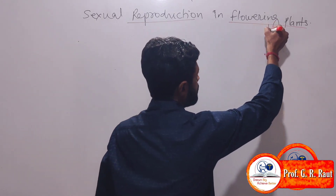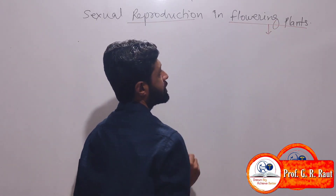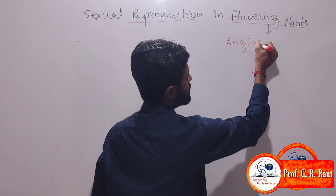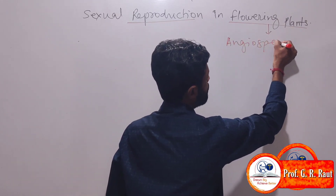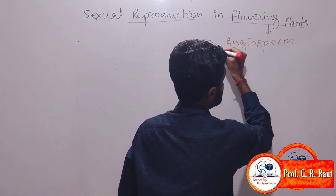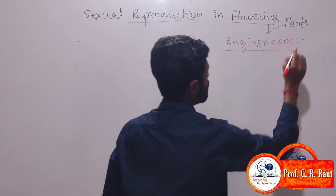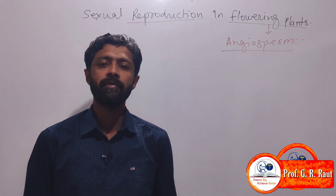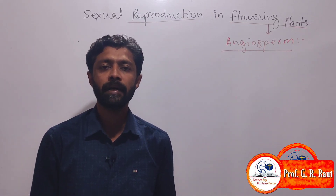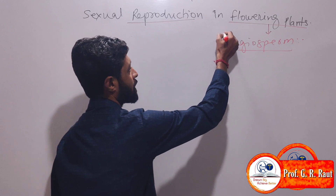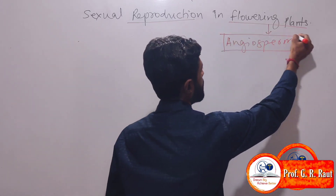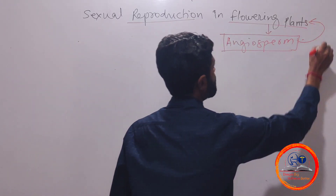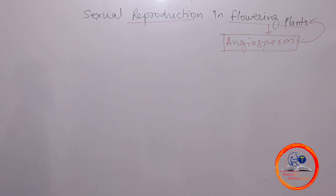Today, flowering plants are called angiosperms. In evolution, we have algae, bryophytes, pteridophytes, gymnosperms, and angiosperms. Angiosperm is the only plant which has a specialized reproductive part which we call a flower.